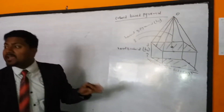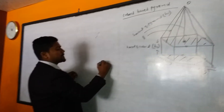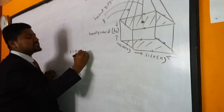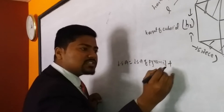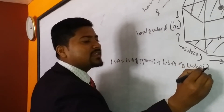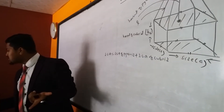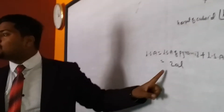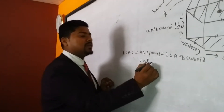Now let's find the lateral surface area (LSA) of this combined solid. The LSA of the cuboid-based pyramid equals LSA of pyramid plus LSA of cuboid. For a square-base pyramid, LSA = 2aL. This formula was derived in a previous video, so we use it directly: LSA of pyramid = 2aL.